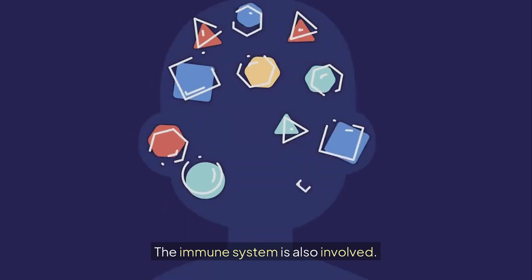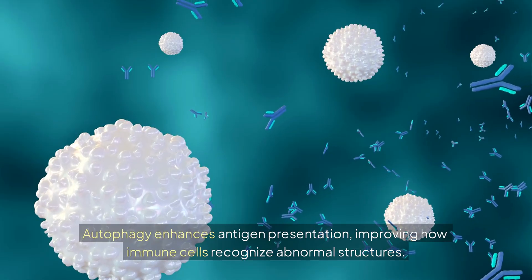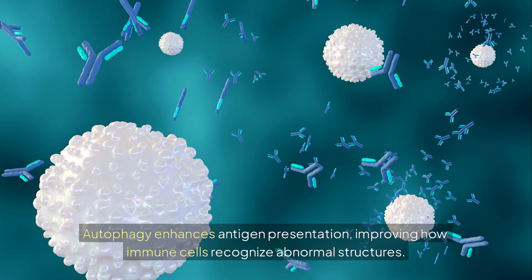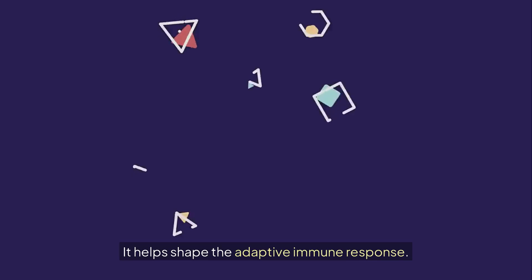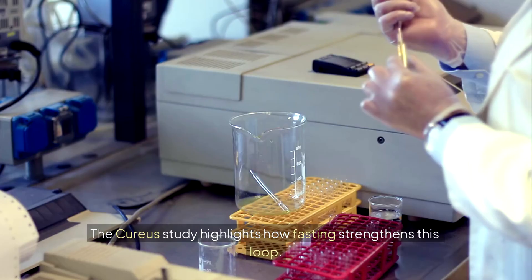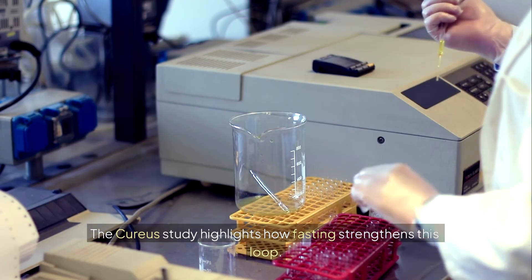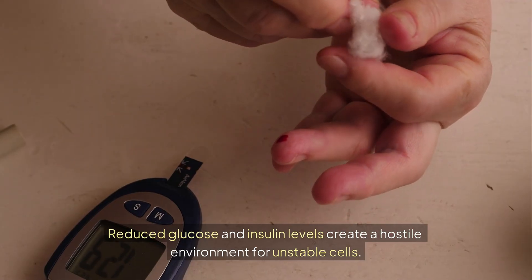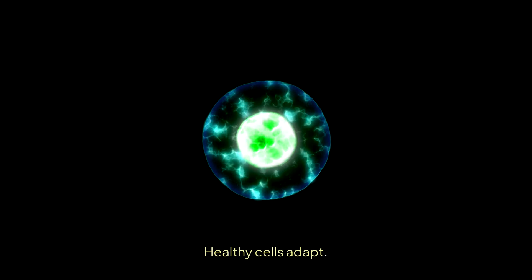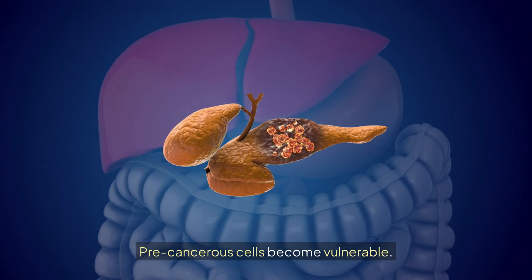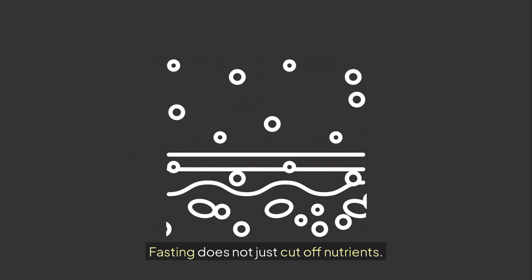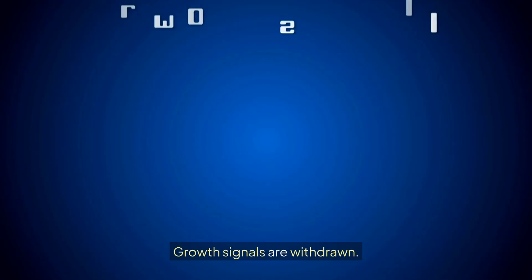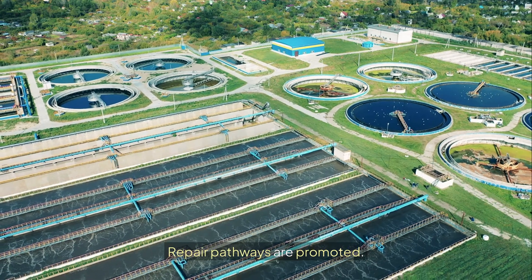The immune system is also involved. Autophagy enhances antigen presentation, improving how immune cells recognize abnormal structures. It helps shape the adaptive immune response. The CURIOUS study highlights how fasting strengthens this loop. Reduced glucose and insulin levels create a hostile environment for unstable cells. Growth signals are withdrawn. Repair pathways are promoted.